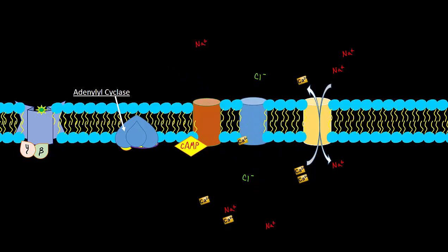The chloride is then going to leak out and this is going to further promote the graded potential that's going to take place inside of this olfactory neuron.